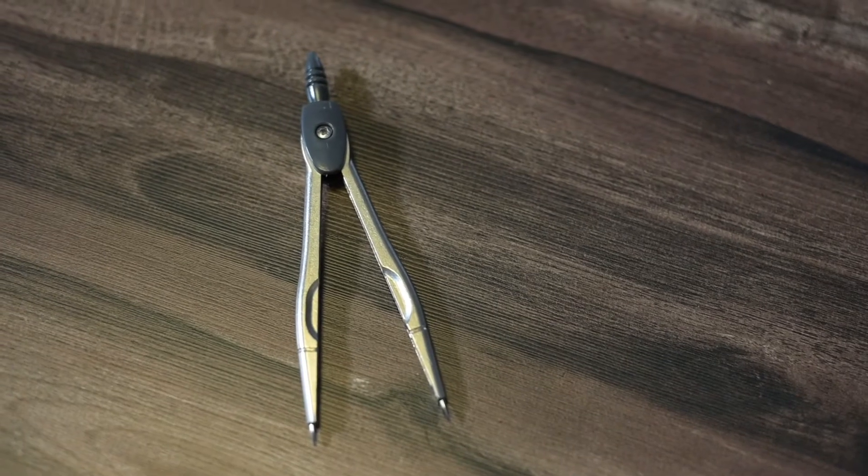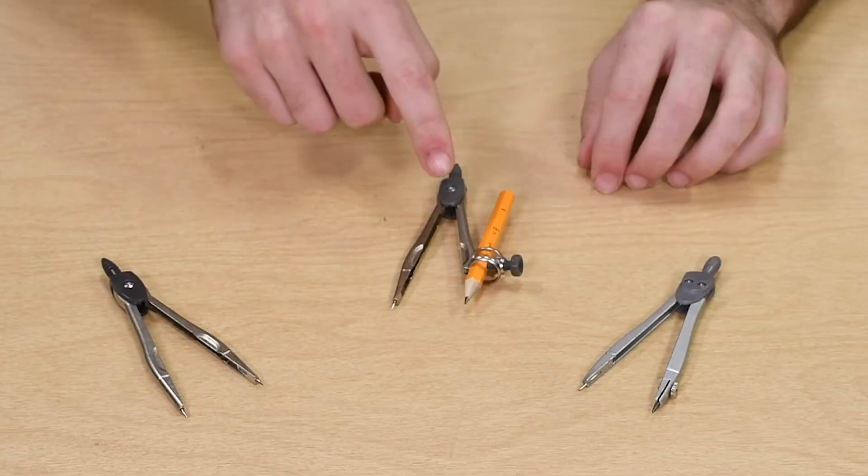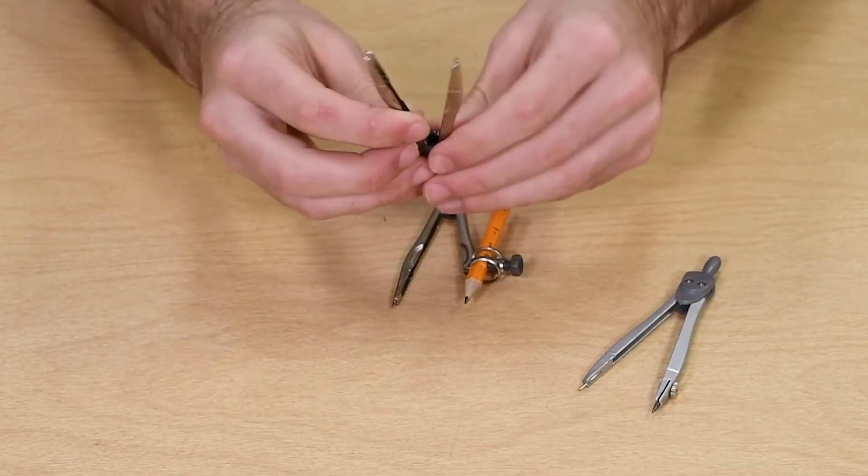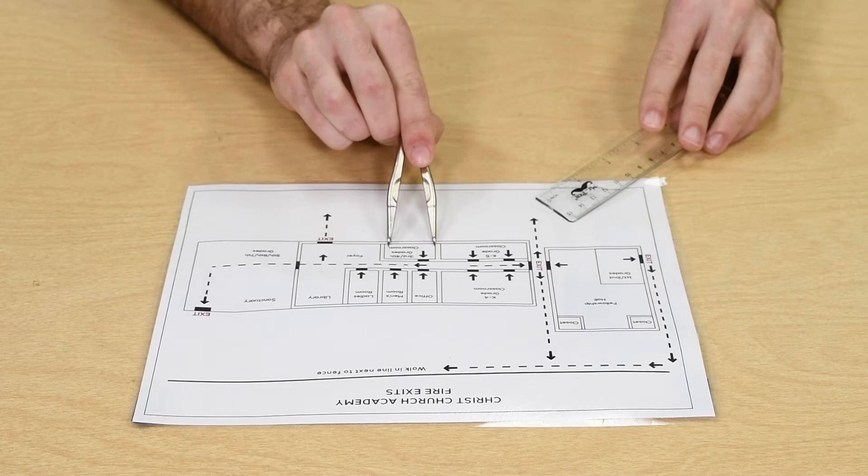There is also a divider in the pack. The difference between a divider and a compass is that it has needles on both legs. This is used for measuring a length without leaving any marks.